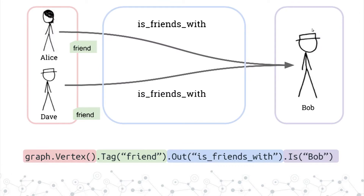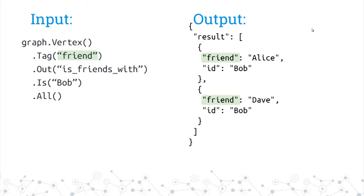Here's what a graph query looks like, at least for Kayleigh. If you can write jQuery, you can sort of understand this. I'm starting from everything, tagging that with friends, so I want to get all the friends, and then follow out the relationships of isFriendsWith and find something that I know to be Bob, as opposed to all their friends if I didn't constrain that. The input should look like this: tag the vertices with friend, get the results out with the tag filled in.